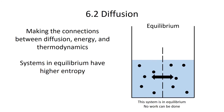If a system is in equilibrium, then you have high entropy, and if you have high entropy, no work can be done. You still have energy in the system — all the molecules are moving around — but they're moving around randomly, and you can't harness that random movement to do any meaningful work.